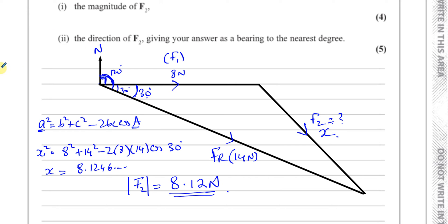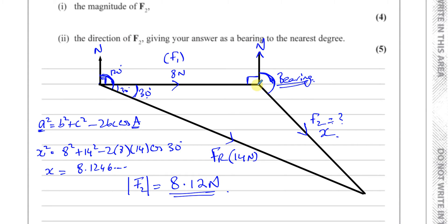Now for part two, we need to find the bearing of F2. All bearings are measured from the north line in the clockwise direction. I'll draw the north line here and find this angle theta. If I find theta, then 360 minus (90 plus theta) will give us the bearing.